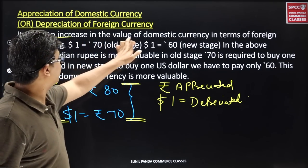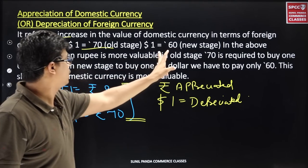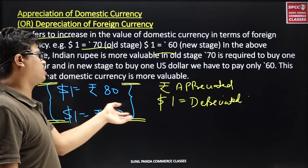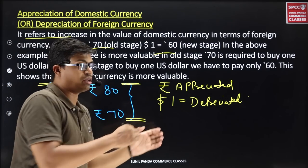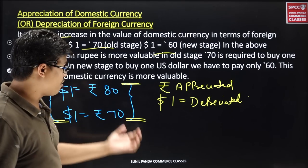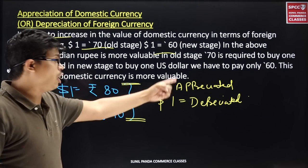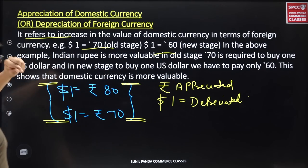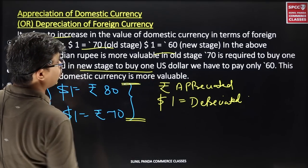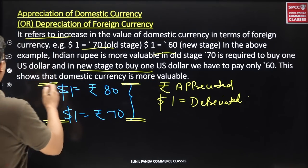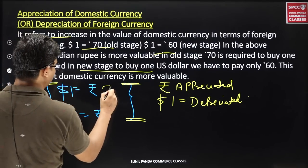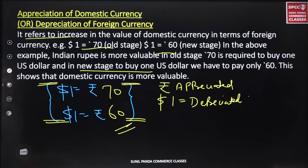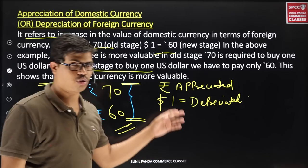Appreciation of domestic currency refers to an increase in the value of domestic currency in terms of foreign currency. In the new stage, to buy one dollar you only have to pay 60 rupees instead of 70. Your rupee's value has increased — your currency is stronger. This is called appreciation of domestic currency, or we can say depreciation of foreign currency.